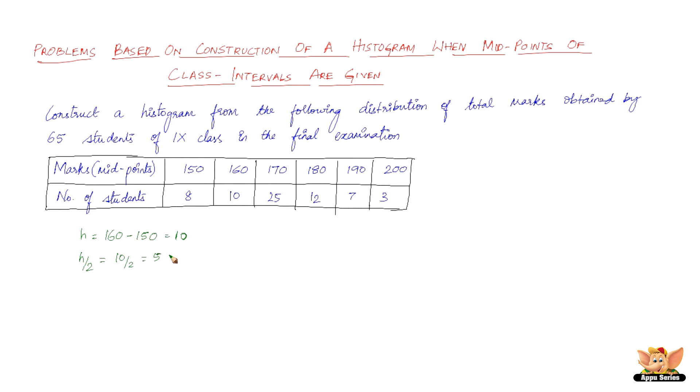Now the lower and upper class limits of the first class are: the lower limit would be to subtract 5 from 150, and the upper class limit would be to add 5 to 150. If you remember, that is what we discussed in the previous video.